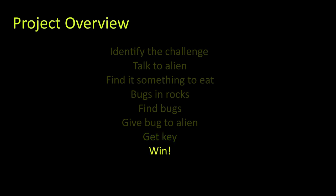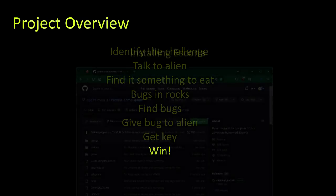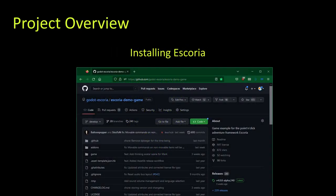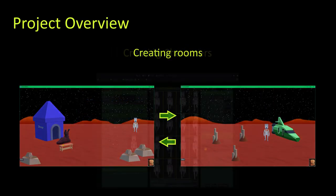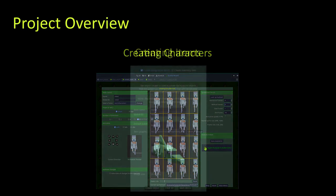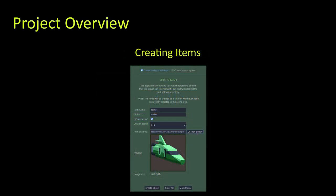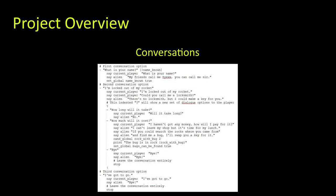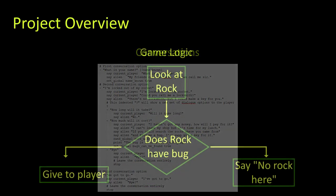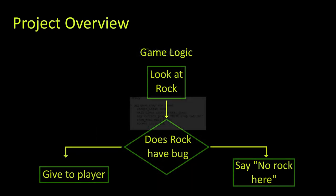Some of the things this tutorial will cover are: installing Escoria and creating the project, creating the rooms and joining them, creating the characters, creating objects — both those that can be added to your inventory and background objects — conversations, Escoria scripting game logic, and cutscenes.